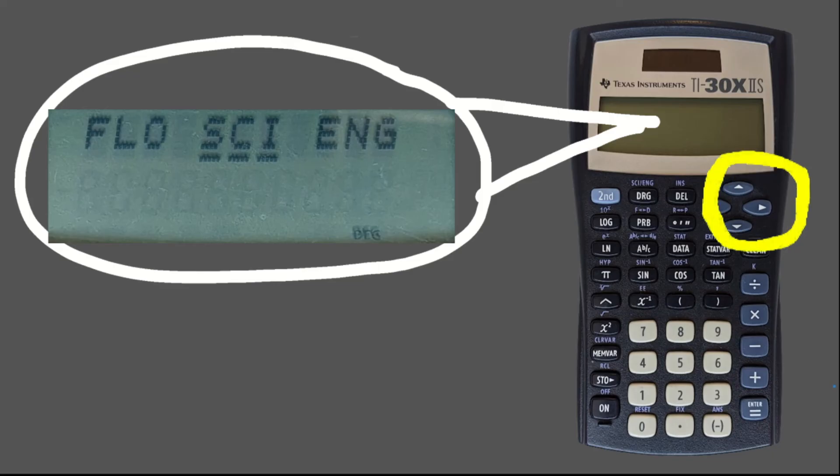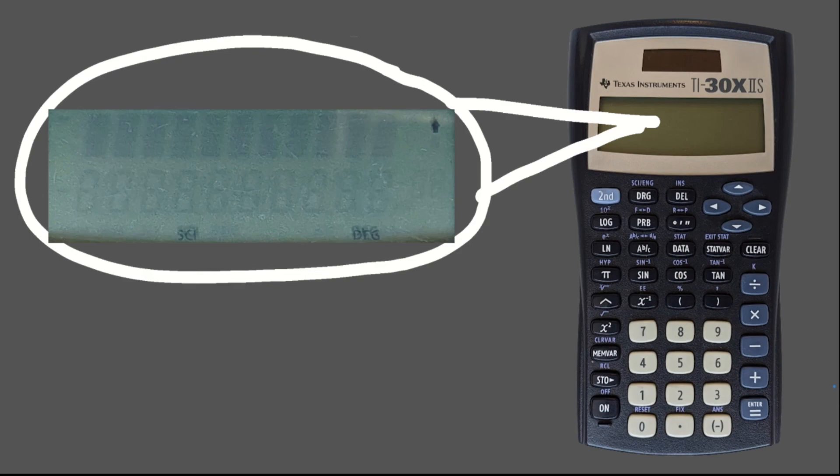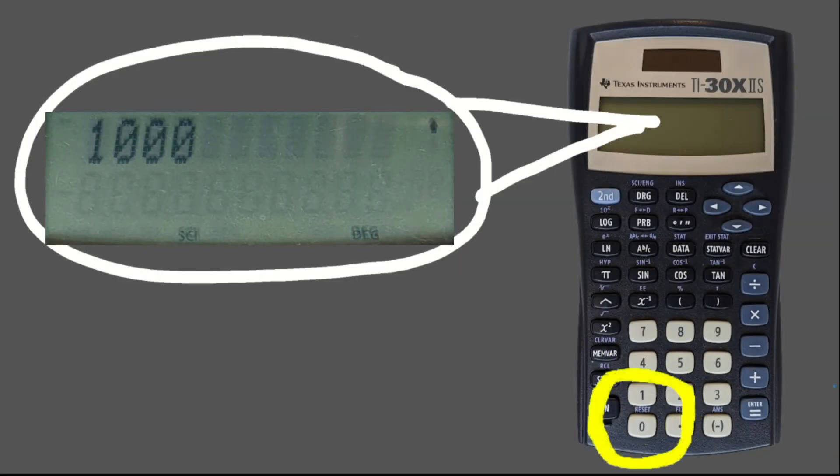Anyway, once you're in the menu, you can use the left and right arrow buttons to select either FLO or SCI. Once your desired option is underlined, hit the equal or enter button to change your display mode. You can see now, if you type in 1, 0, 0, 0, we get 1 times 10 to the 3, or 10 to the 3rd.